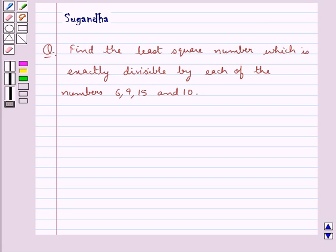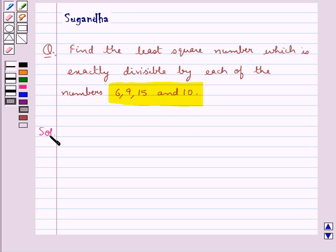Hello and welcome to the session. In this session we discuss the following question which says find the least square number which is exactly divisible by each of the numbers 6, 9, 15 and 10. Let's proceed with the solution.